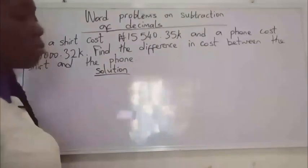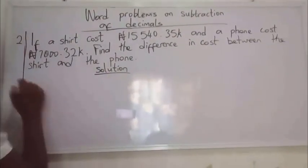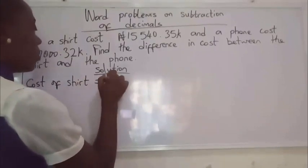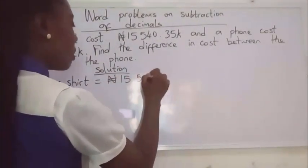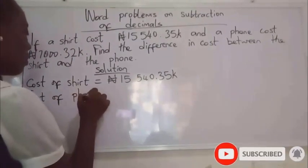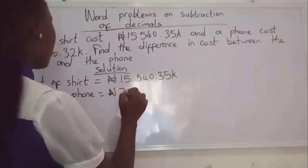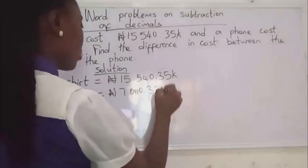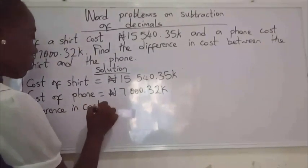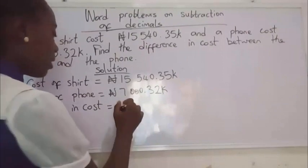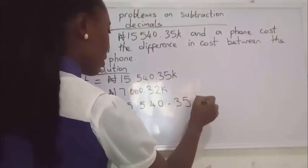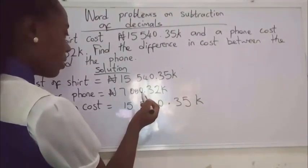Remember, difference is simply subtraction. Let's write out our information. Cost of shirt: fifteen thousand five hundred and forty naira, thirty-five kobo. Cost of phone: seven thousand nine hundred and fifty naira. For the difference in cost, we arrange them according to place value.